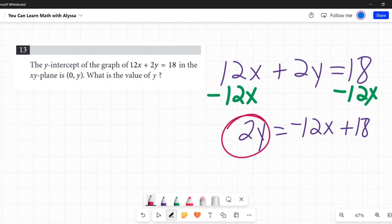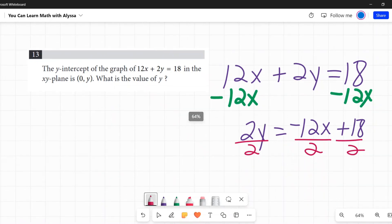Then because it's 2 times y, I'm going to divide by 2, so I need to divide everything there by 2. I'm undoing that 2 times y.